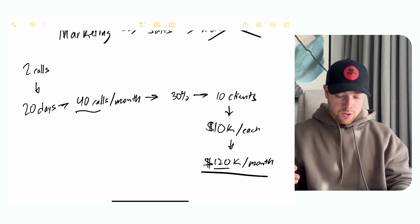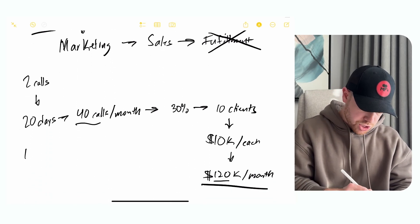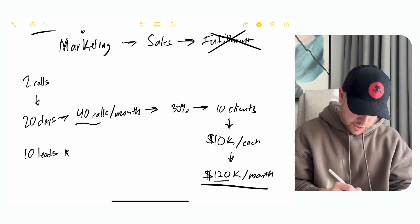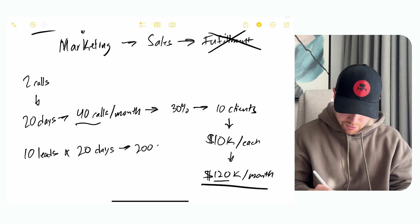That would put us at exactly $100,000 a month. And now that we know that, we need to focus on how can I get 10 leads a day. And if we reverse engineer this, then it's 10 leads times 20 working days in a month, that's 200 leads a month.